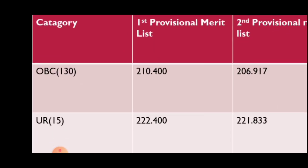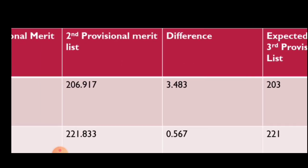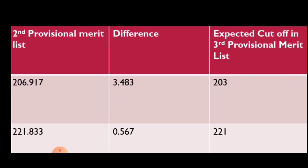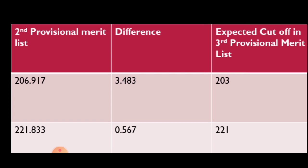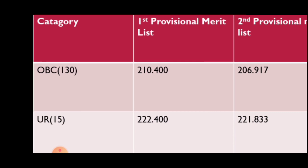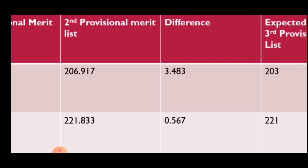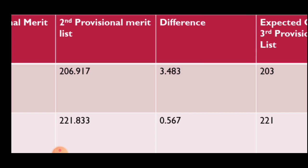So let's look at the first provisional merit list and the second provisional merit list. The second provisional merit list is 206.917. The difference between the first and second provisional merit list is 3.483. The second provisional merit list total is 22.833, with a difference of 0.567, so the expected cutoff is 221.